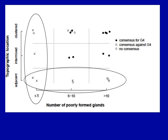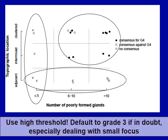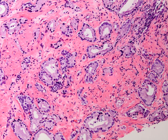Similarly, when poorly formed glands are immediately adjacent to well-formed glands, there was uniform consensus against pattern 4. Experts considered the poorly formed gland pattern 4 criteria only when you have six or more poorly formed glands seen in a cluster pattern. The important message is to use a high threshold — be conservative with this pattern, and whenever you are in doubt, default to grade 3. This is especially critical when dealing with a small focus of prostate cancer. Here is an example where several poorly formed glands are seen throughout the biopsy, but this is likely due to tangential sectioning and is graded as 3+3=6.